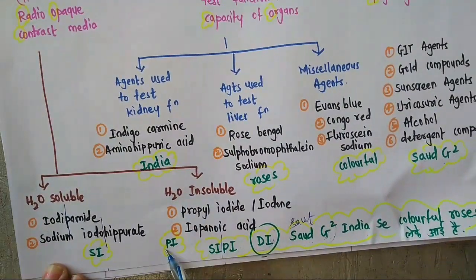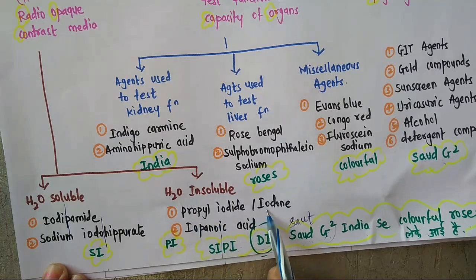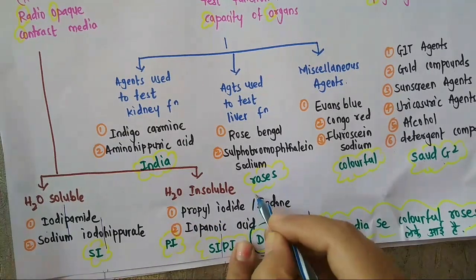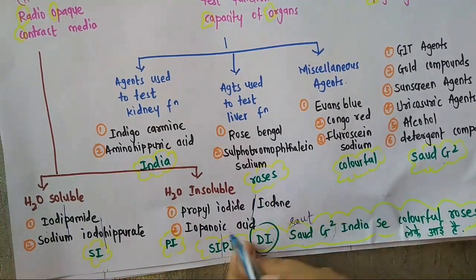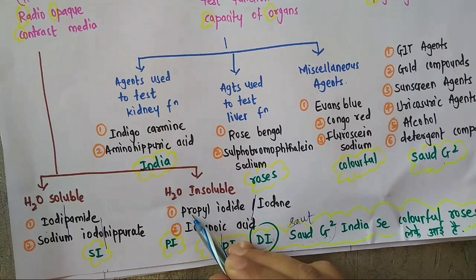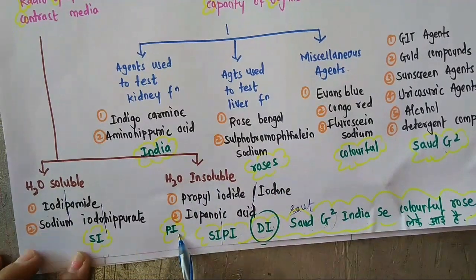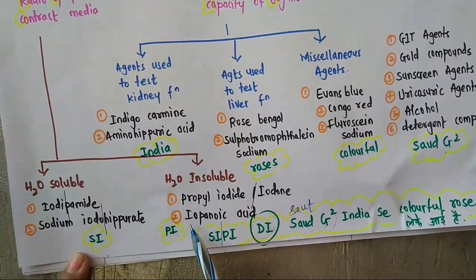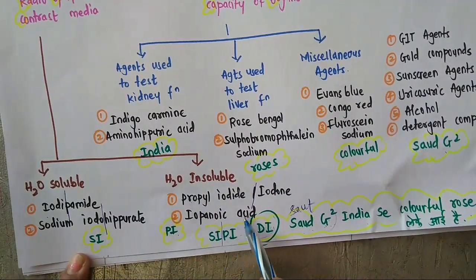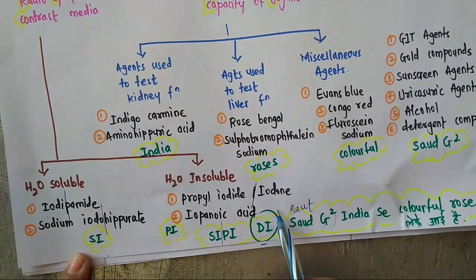For water insoluble Radio Opaque Contrast Media, P stands for propyl iodide or propylidone, and I stands for iopanoic acid.